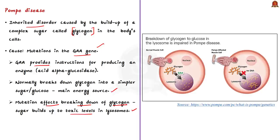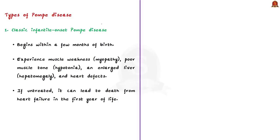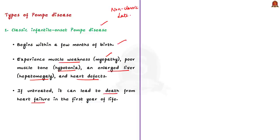There are three types of Pompe disease differing in severity and age of appearance: classic infantile onset, non-classic infantile onset, and late onset. The classic infantile onset form begins within a few months of birth. Infants with this disorder typically experience muscle weakness (myopathy), poor muscle tone (hypotonia), an enlarged liver (hepatomegaly), and heart defects. Affected infants may fail to gain weight and have breathing problems. If untreated, this form leads to death from heart failure in the first year of life.